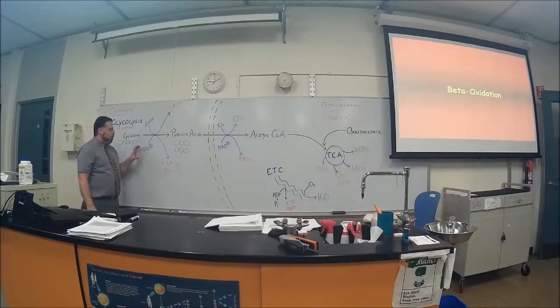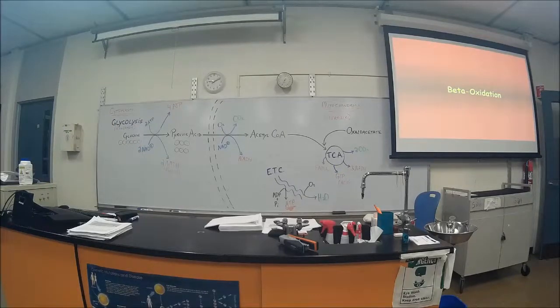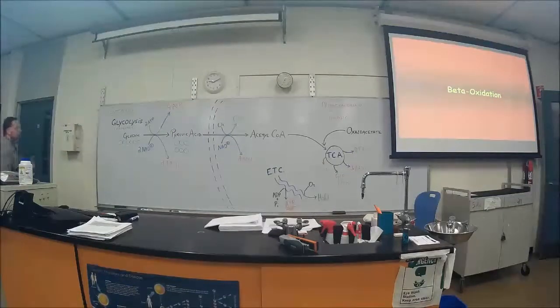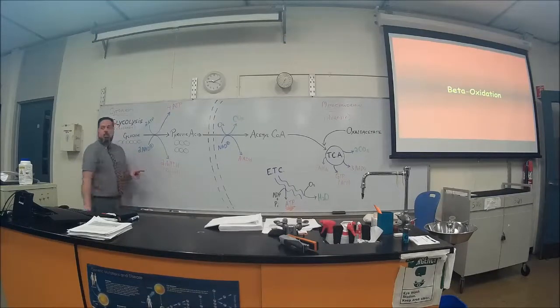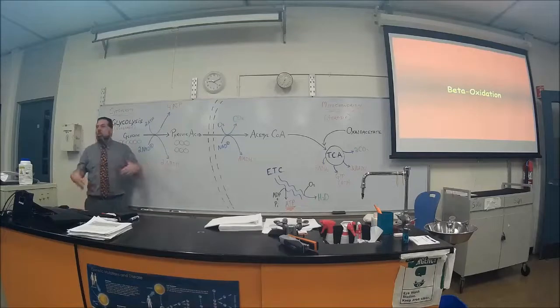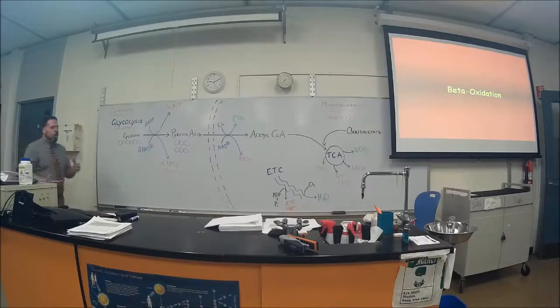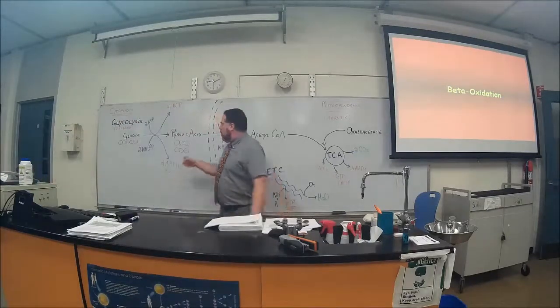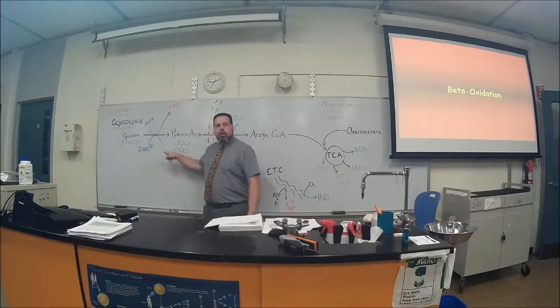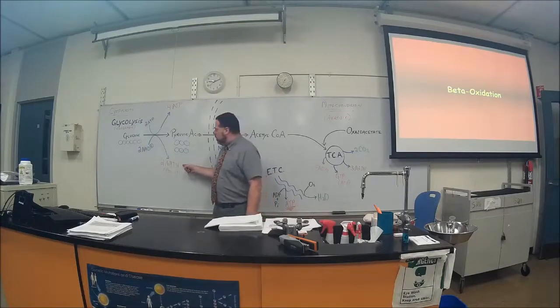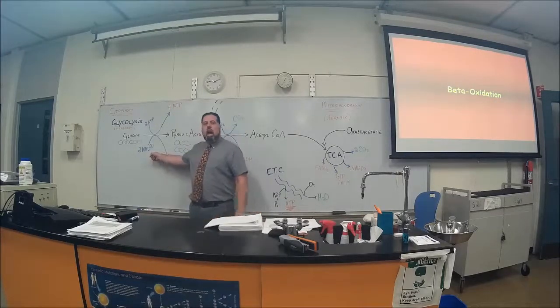You also make something called NAD+. NAD+ is an electron carrier molecule, or it can accept electrons. It will accept one electron here to become an NADH. The H is the electron. Because an electron has a negative charge, we're going to go from positive to neutral. The charge gets reduced, does it not? That's why we say the NADH is the reduced form. This is what we refer to as the oxidized form.